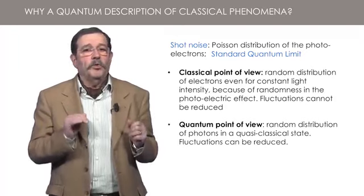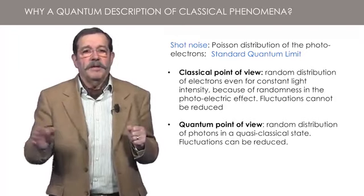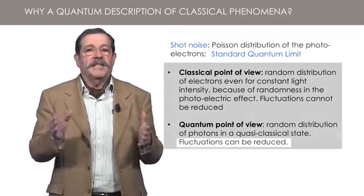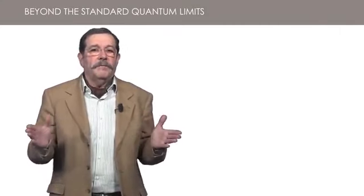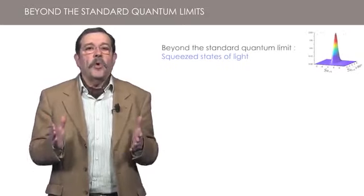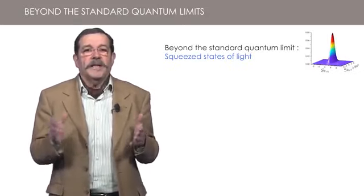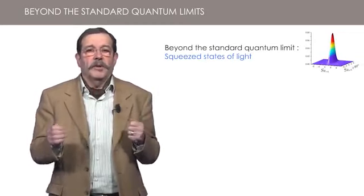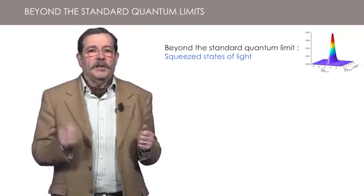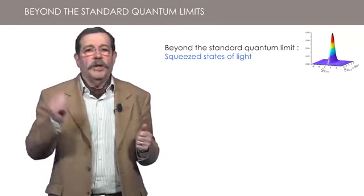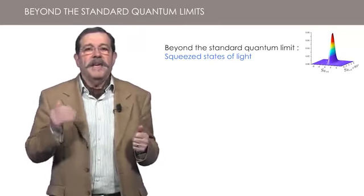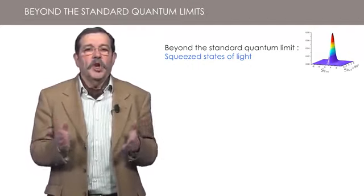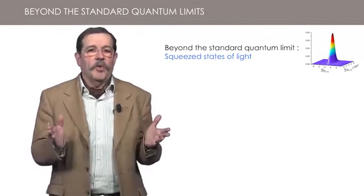If you want to do better than the standard quantum limit, you must use states of light significantly different from quasi-classical states. A celebrated example is squeezed states of light, where some fluctuations are reduced compared to the standard quantum limit. You will discover squeezed states of light in a future lesson and see how they can improve the sensitivity of the great interferometers used to detect gravitational waves.